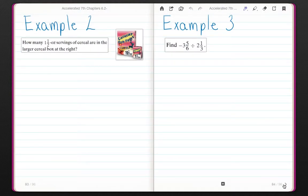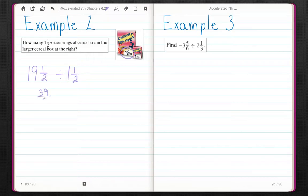How many one and a half ounce servings of cereal are in the larger cereal box at the right? I see that that cereal box is 19 and a half ounces. I'm going to take that full 19 and a half ounces and I'm going to divide it into servings of one and a half to find out how many servings there are. My first step is to turn these into improper fractions. 19 times 2 is 38 plus 1 is 39 halves divided by 3 halves.